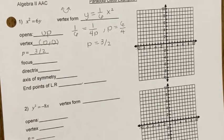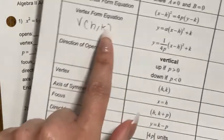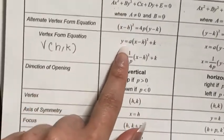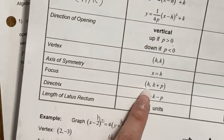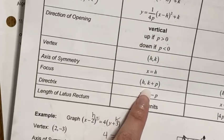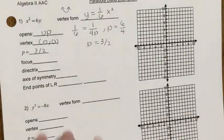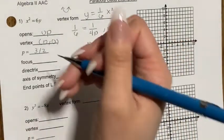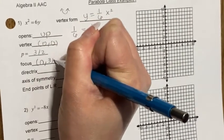With vertex (0, 0) and p = 3/2, the focus for an up-opening parabola is at (h, k + p) = (0, 0 + 3/2) = (0, 3/2).